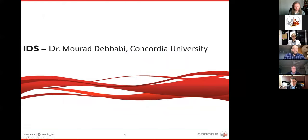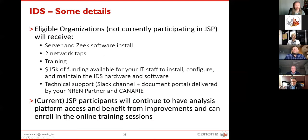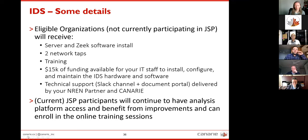Next up is Dr. Murad Dhababi, the interim Dean of the School of Engineering and Computer Science at Concordia. He's going to be talking about the intrusion detection system. For the IDS initiative, eligible organizations are those that have not participated in the Joint Security Project before, and they will receive an appropriate server with Zeek software, two network taps, training for staff, and there is $15K available for your IT staff to install, configure, and maintain this equipment. Technical support via Slack channel and a documentation portal will be delivered by your NREN partner and Canary. For current JSP participants, you'll continue to have analysis platform access and can also enroll in training sessions.